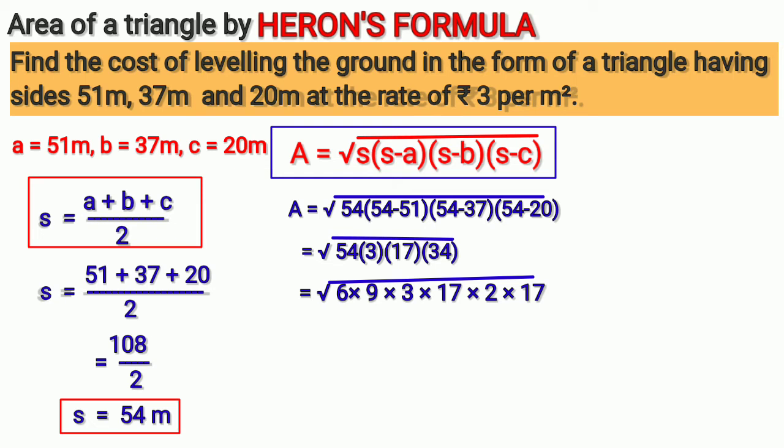Now, to remove the square root, we have to form pairs of numbers or make perfect squares. We have 9 which is 3 squared. We have two 17s, that is 17 squared. Then we have 6, 3 and 2, which we can combine to make 6 squared.